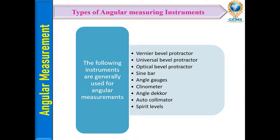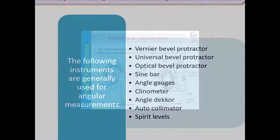The following instruments are generally used for angular measurements: plain bevel protractor, universal bevel protractor, optical bevel protractor, sine bar, angle gauges, clinometer, angle dekkor, and spirit levels. In our syllabus, we cover: universal bevel protractor, sine bar, angle gauges, clinometer, and spirit levels.